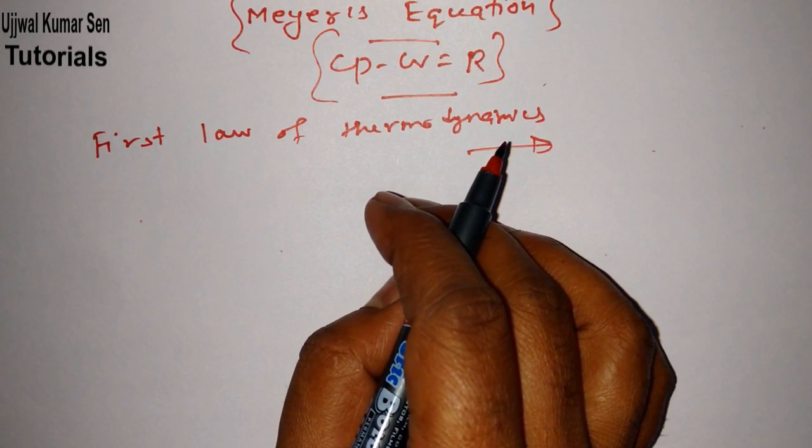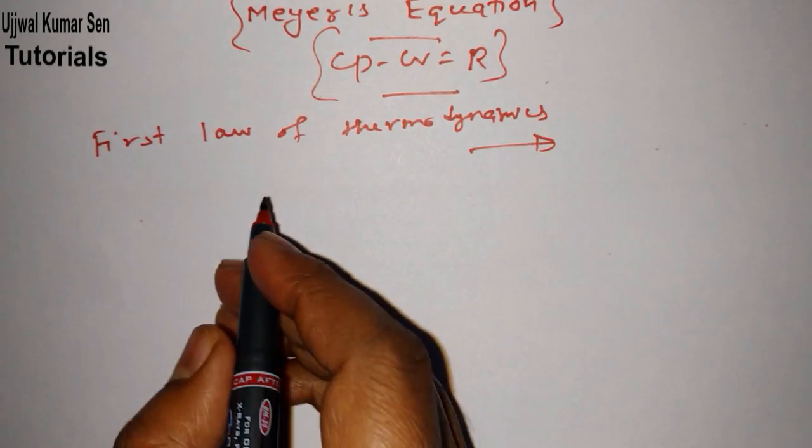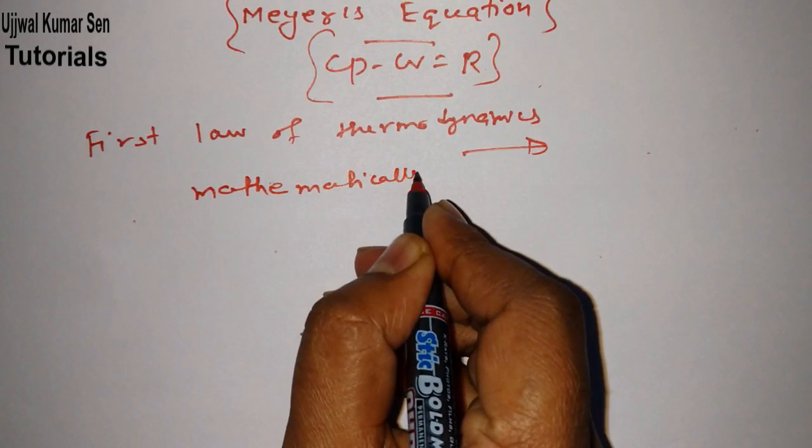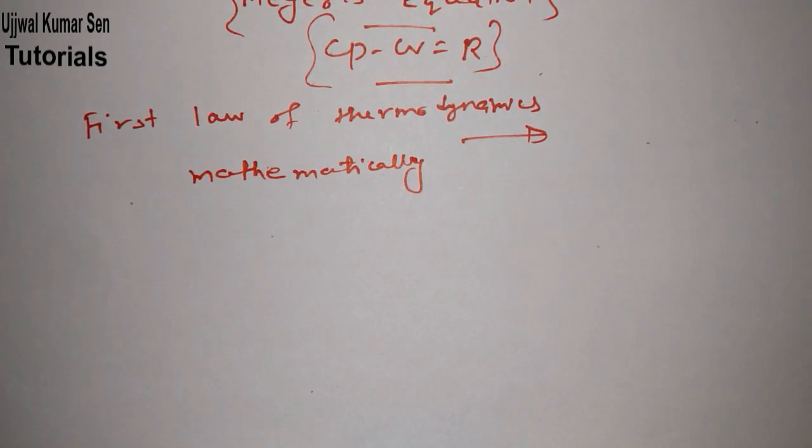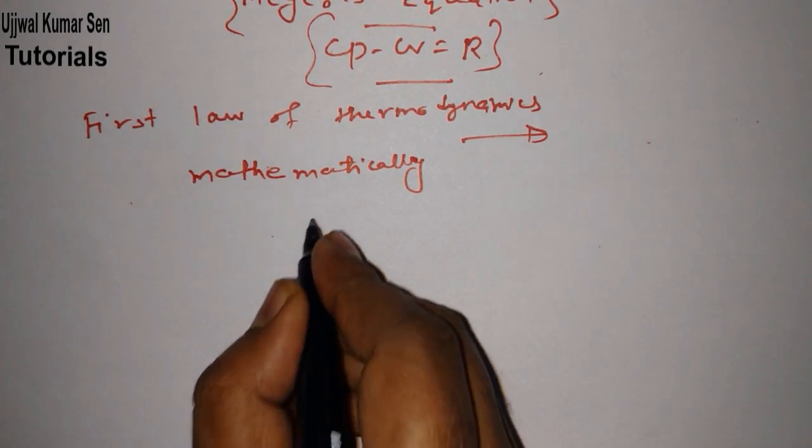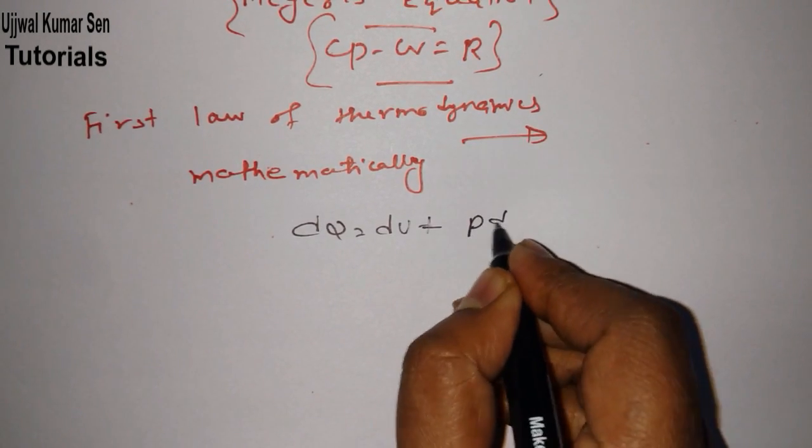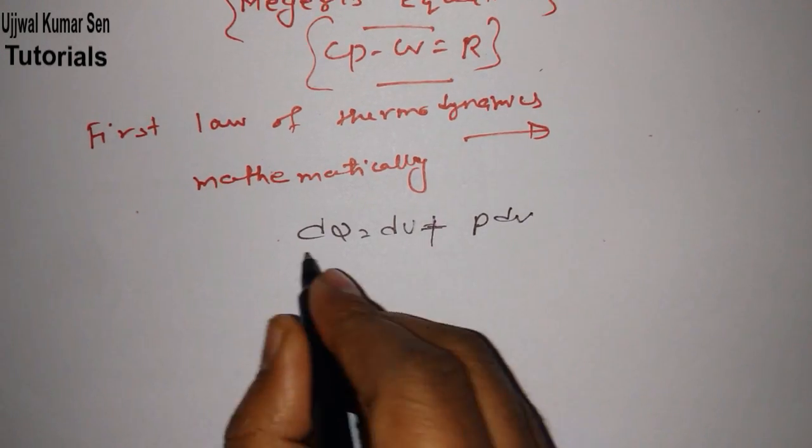What is the first law mathematically? How we can write first law of thermodynamics? That is dQ equal to dU plus P dV.